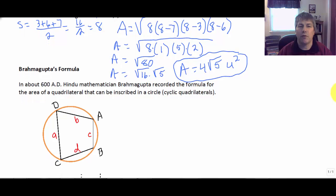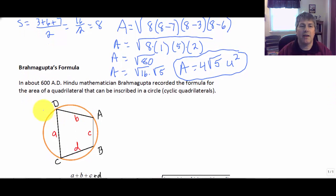Next is Brahmagupta's Formula. In about 600 AD, Hindu mathematician Brahmagupta recorded this formula for the area of a quadrilateral that can be inscribed in a circle. So this is a pretty specific formula. This isn't just any old quadrilateral. It's got to be able to be inscribed inside of a circle. So if you remember, an inscribed quadrilateral, the opposite angles must be supplementary. So for a quadrilateral to be inscribed in a circle, the opposite angles are supplements. That doesn't happen all the time. So you've got to be careful.